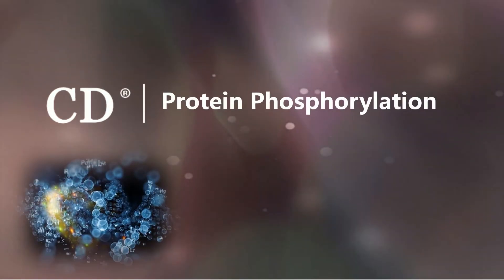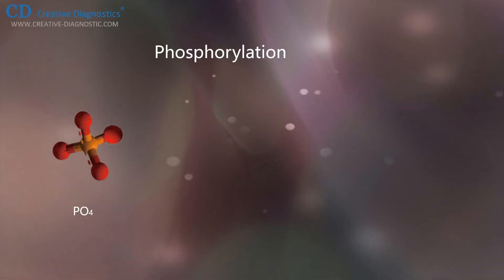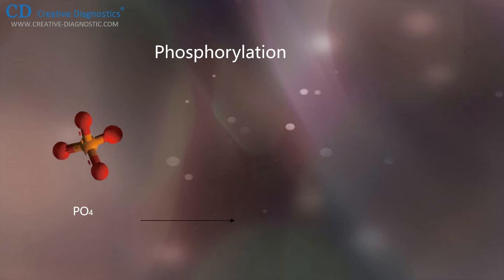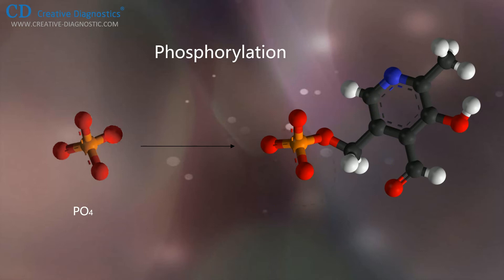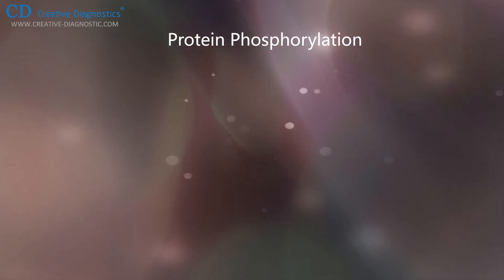We are going to talk about protein phosphorylation. Phosphorylation refers to the addition of a phosphate group on a molecule, which is a crucial chemical reaction, especially important for protein function as this modification activates. Protein phosphorylation is the most common and important molecular mechanism of acute and reversible regulation of protein function.